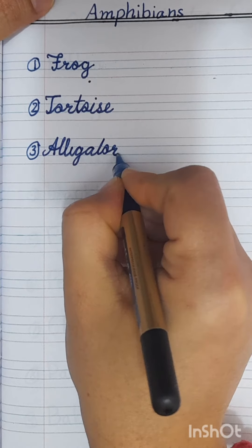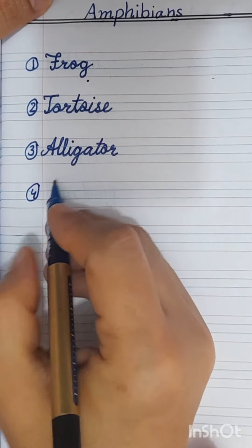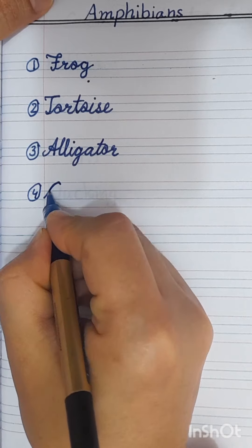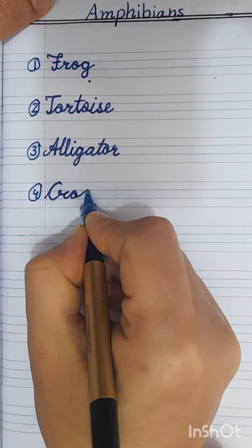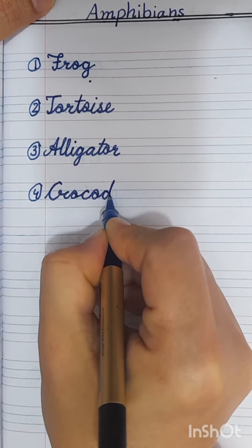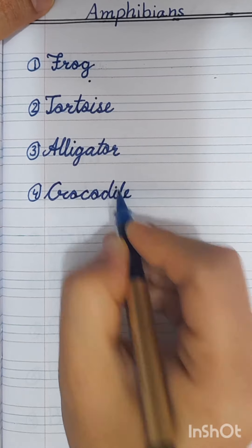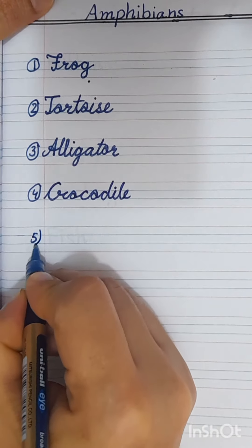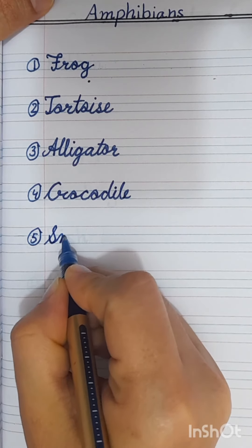R, alligator. Number four: crocodile, C-R-O-C-O-D-I-L-E, crocodile. Number five: snail, S-N.